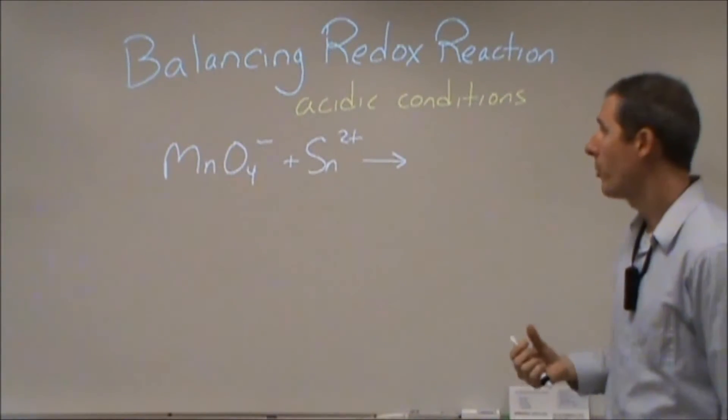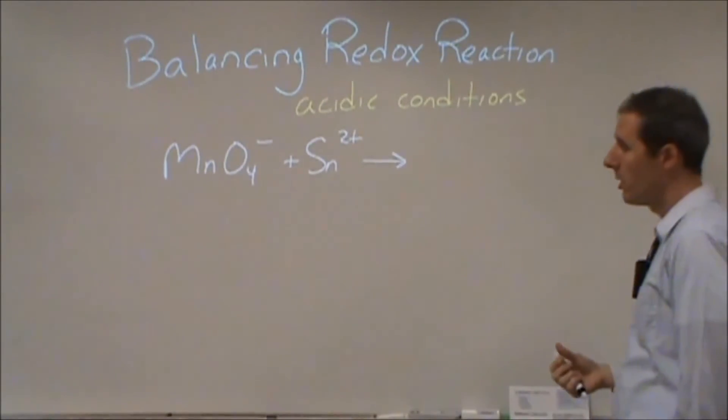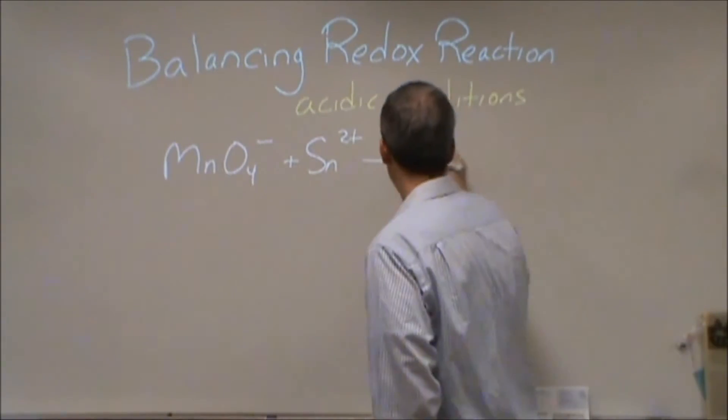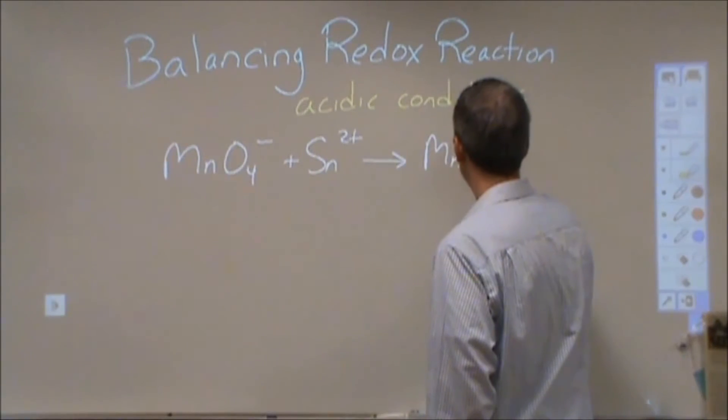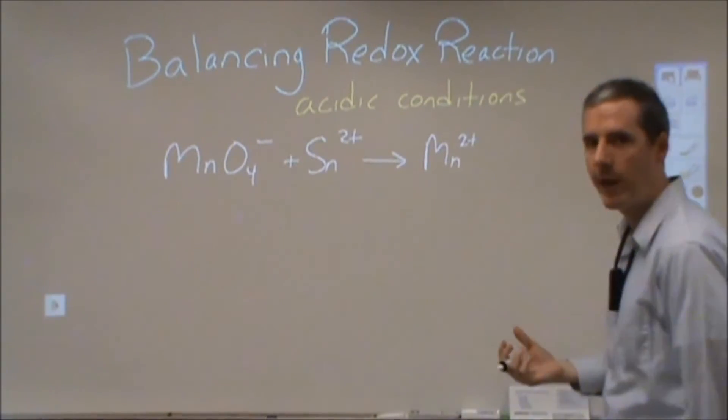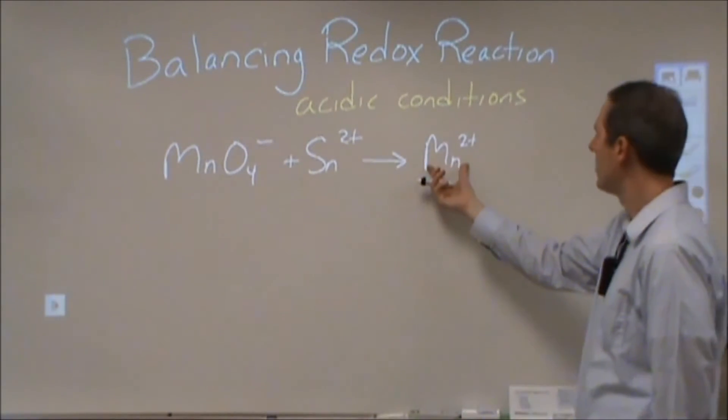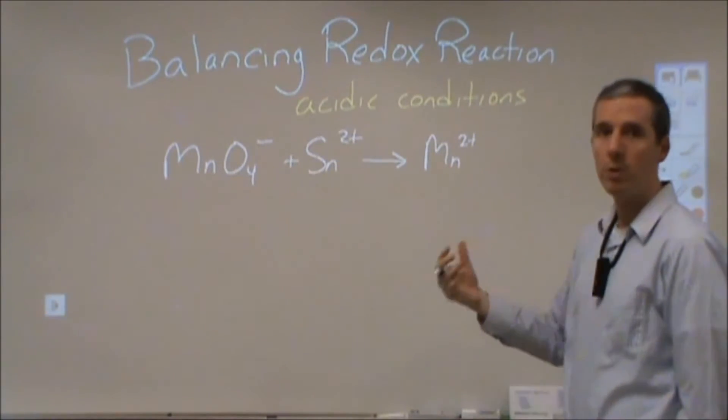The other thing is you're going to need to memorize what some of the products are. So permanganate is going to turn into Mn2+ under acidic conditions. There's no way to predict that for a high school chemistry student or a college chemistry student. You just need to know that.